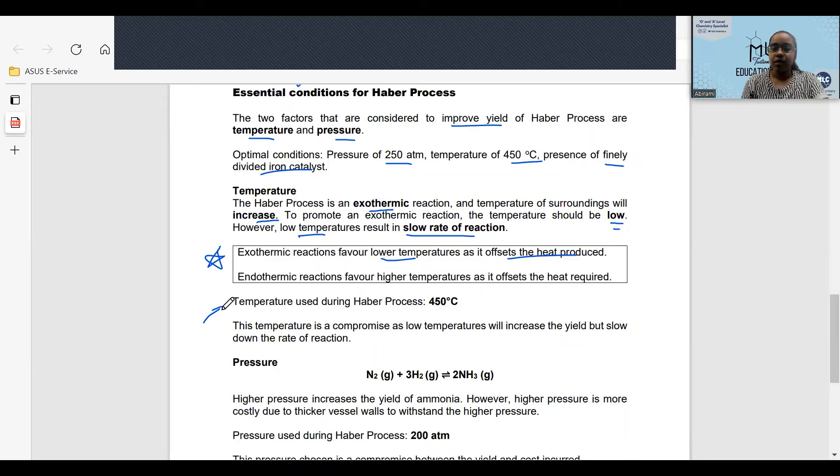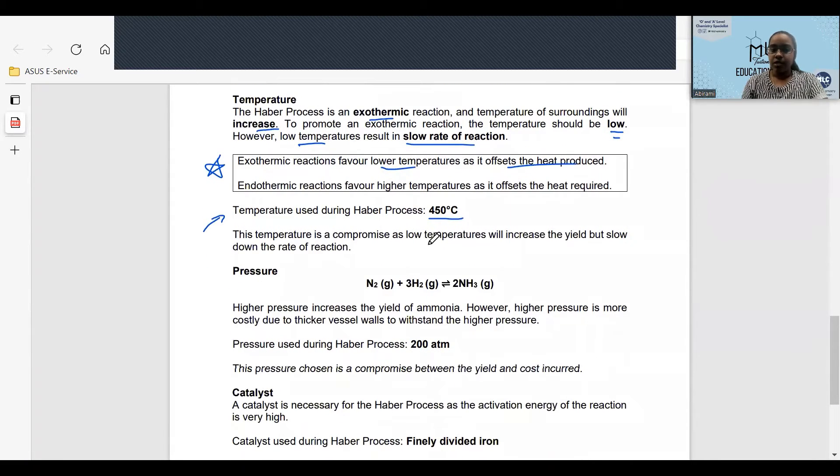The temperature used during the Haber process is 450 degrees Celsius. This temperature is a compromise as low temperatures will increase the yield but slow down the rate of reaction.